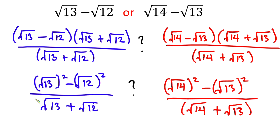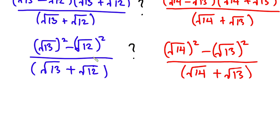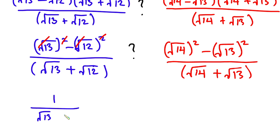Now let's go ahead and simplify. The square root and square cancel, so we have 13 minus 12, which is 1, all divided by square root of 13 plus square root of 12.